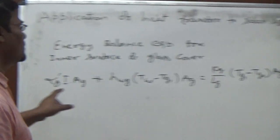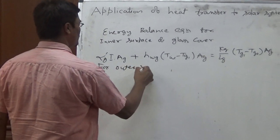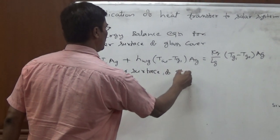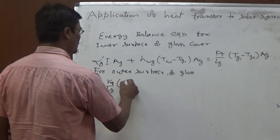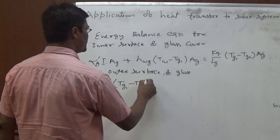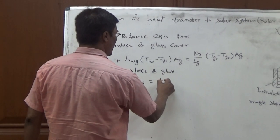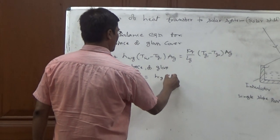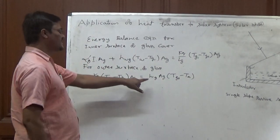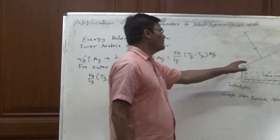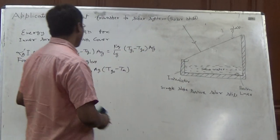So for outer surface of glass, we have KG upon LG TGI minus TGO into AG. This is equal to the heat loss. Heat loss will be H1G into AG into TGO minus TA. H1G is the equivalent heat transfer coefficient, equivalent to convection and radiation from glass surface to the atmosphere.